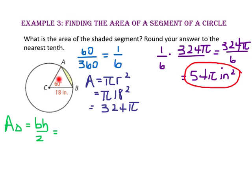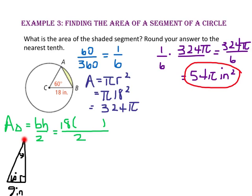Drawing the altitude creates a 30-60-90 triangle with a short leg of half of 18, which is 9 units. The long leg of a 30-60-90 triangle is √3 times longer than the short leg, so the height is 9√3. Since 18 times 9√3 divided by 2 is 81√3, the area of triangle ACB is 81√3 square inches.